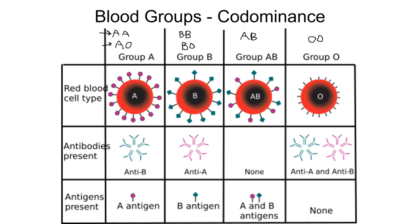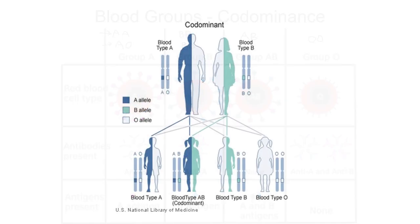If you're type O, you can't receive blood from A, B, or AB — you can only get blood from another type O. If you're type A, you can get blood from type A or type O. If you're type B, you can get blood from B or O. If you're AB, you can get blood from anyone because you produce none of those antibodies — you're the universal acceptor. Type O is the universal donor. Antigens are the things that antibodies attack.